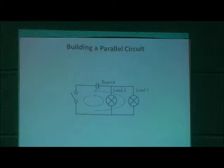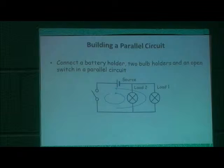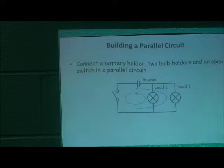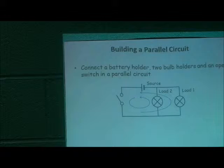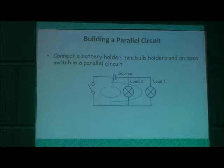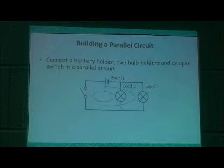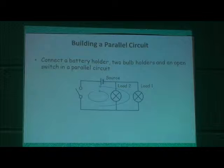Students now build a parallel circuit — connecting the battery holder, two bulbs, and an open switch. This is more complicated because the physical hookup may not look identical to the diagram. They'll likely need more wires than in the series circuit, so we give them a total of six wires. We don't want them constrained; we want them to figure out a way and maybe find a more efficient one.